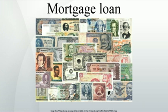Mortgage lending is the primary mechanism used in many countries to finance private ownership of residential and commercial property. Although the terminology in precise forms will differ from country to country, the basic components tend to be similar. Property: the physical residence being financed. The exact form of ownership will vary from country to country, and may restrict the types of lending that are possible.